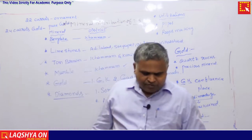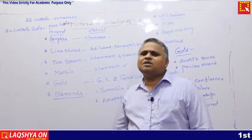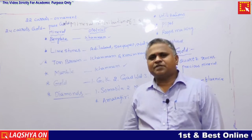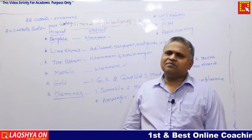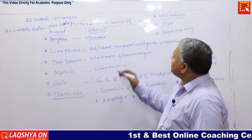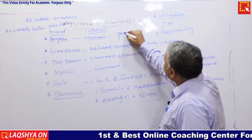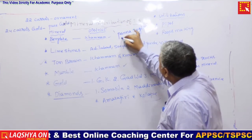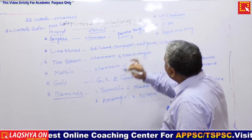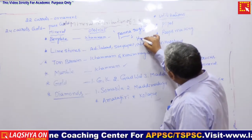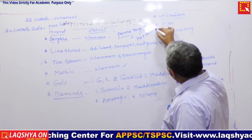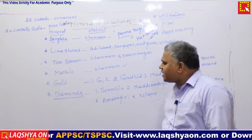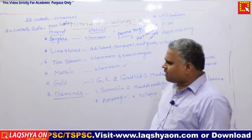As per diamond results and production, Madhya Pradesh stands first in the country. Diamond deposits are sufficiently available in the Panna region of Madhya Pradesh. Panna is located in the Ken River Valley.